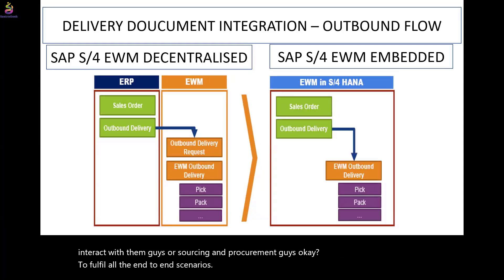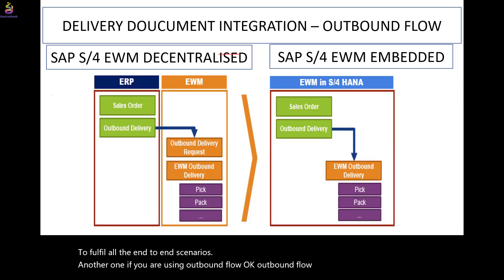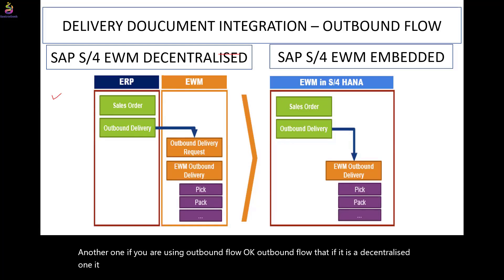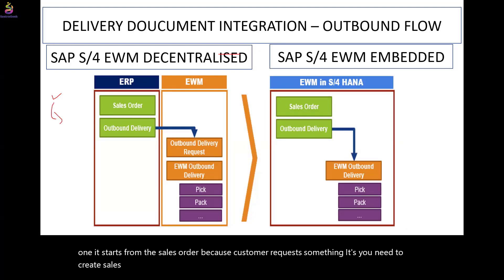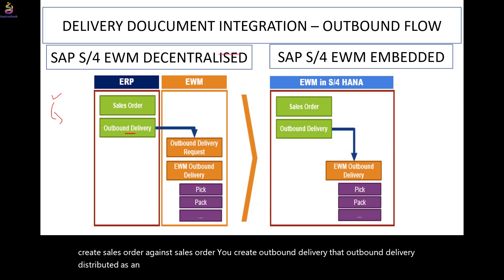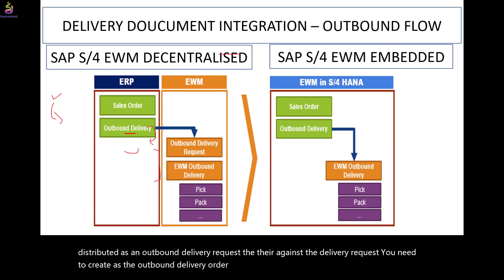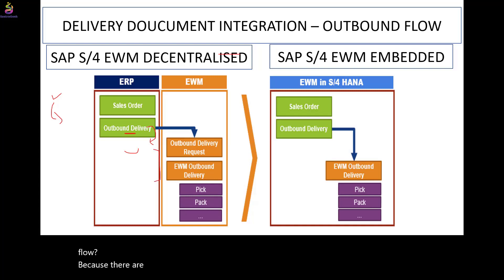For the outbound flow in a decentralized setup, it starts from the sales order because the customer requests something. You create a sales order, then against the sales order you create an outbound delivery. That outbound delivery is distributed as an outbound delivery request, and from the delivery request you create the outbound delivery order. In the outbound flow you perform picking, packing, staging, and loading activities.